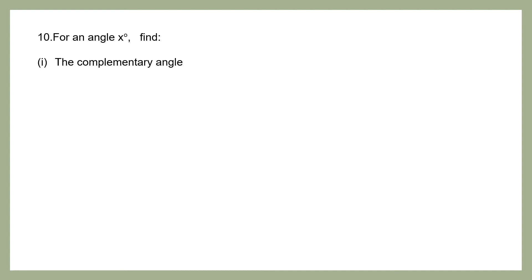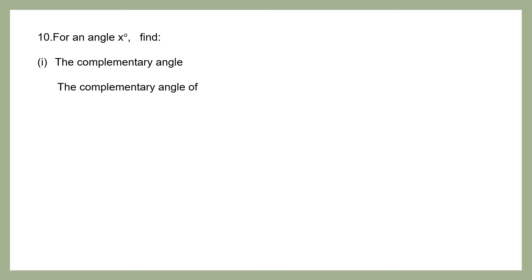Question 10. For an angle x degrees, find the complementary angle. Whenever you think of the complementary angle, think of 90 degrees. So the complementary angle of x degrees will be 90 degrees minus x degrees. I can rewrite this as (90−x) degrees. This is the angle that is complementary to x degrees.